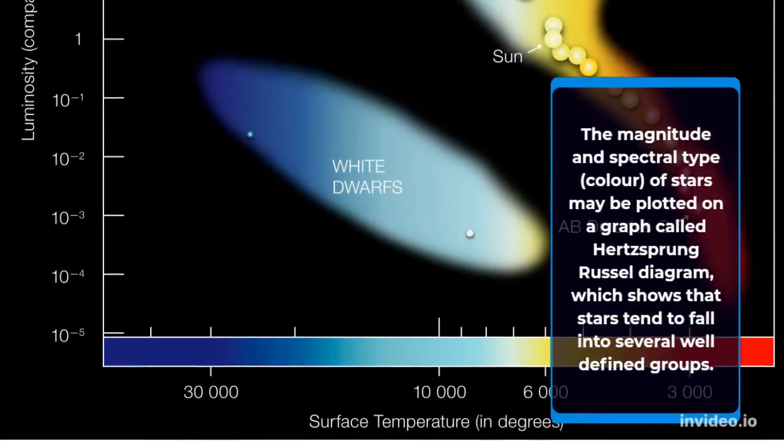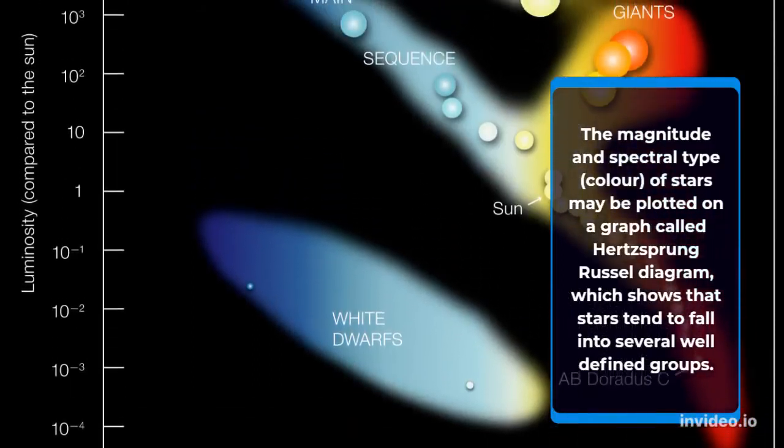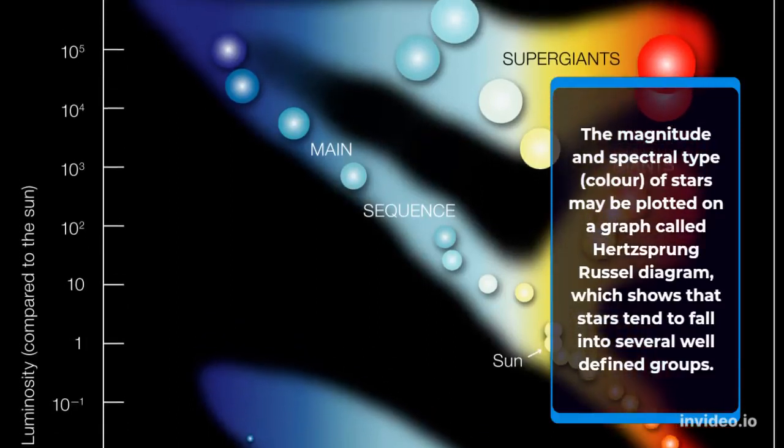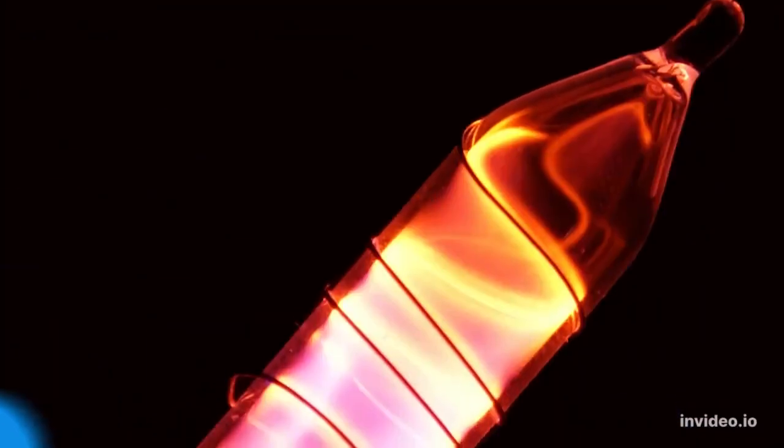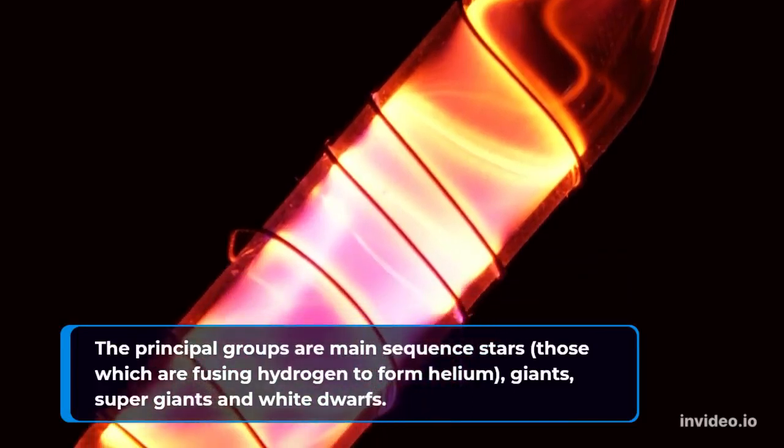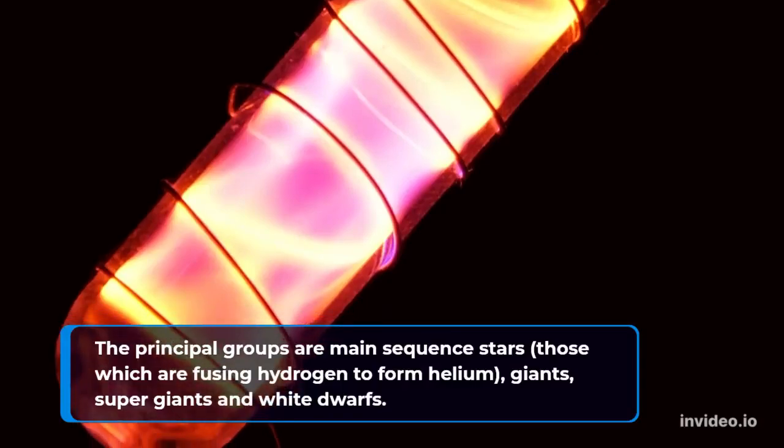The magnitude and spectral type of stars may be plotted on a graph called the Hertzsprung-Russell diagram, which shows that stars tend to fall into several well-defined groups. The principal groups are main sequence stars (those which are fusing hydrogen to form helium), giants, supergiants, and white dwarfs.